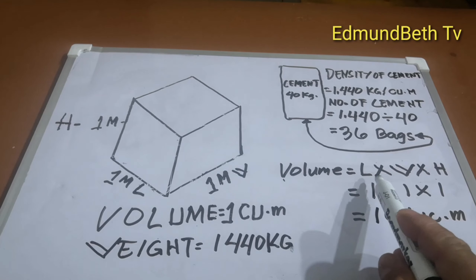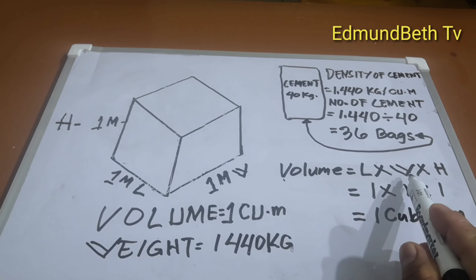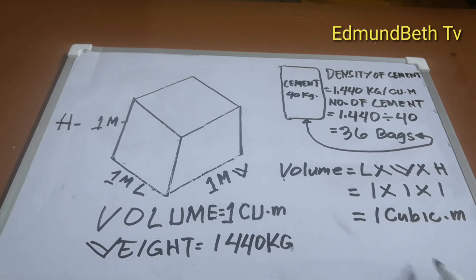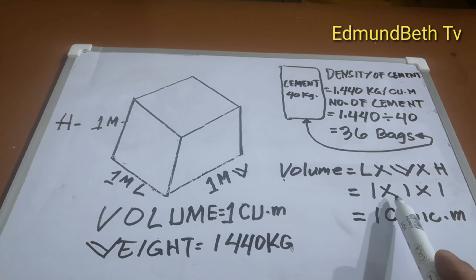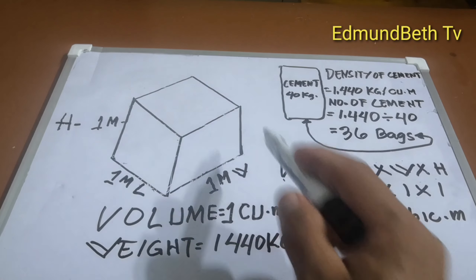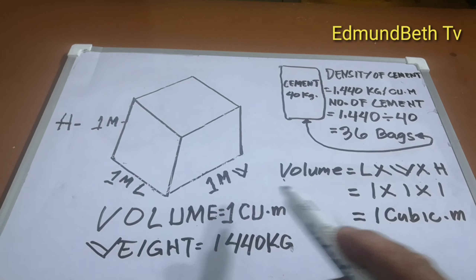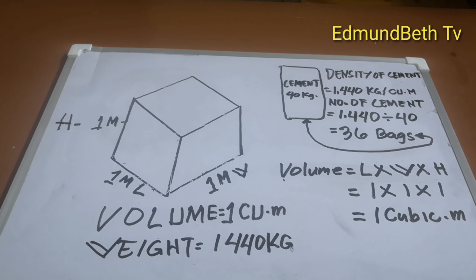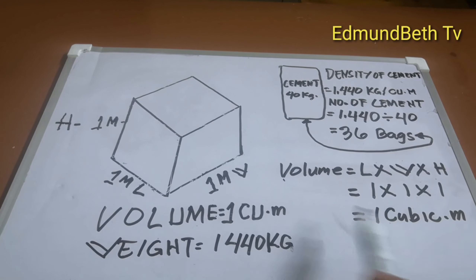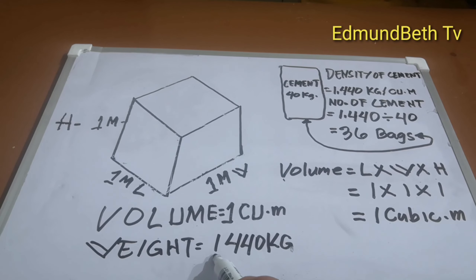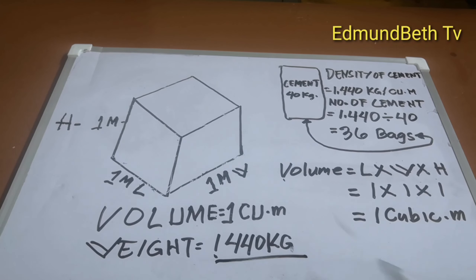I-times lang natin mga idol: length times width times height. So 1 times 1 times 1 equals 1 cubic meter. Ang ganitong box ay 1 cubic meter siya, at ang ganitong box ay may bigat na 1,440 kilograms.